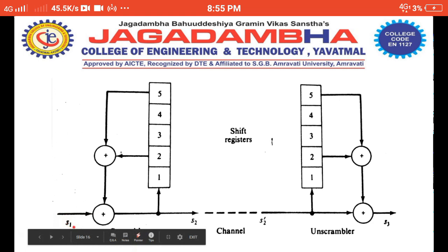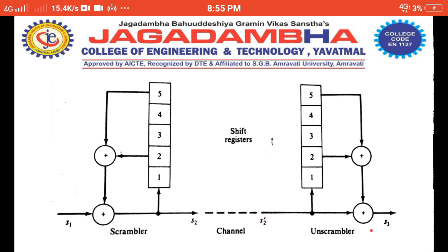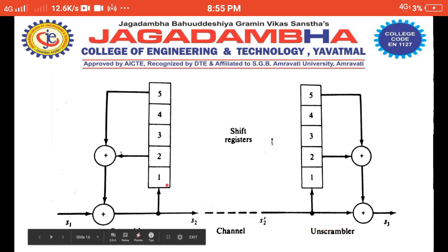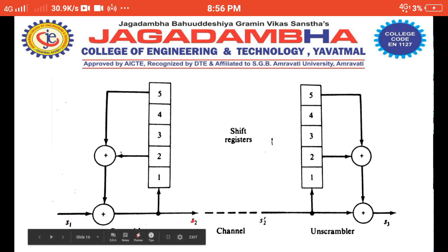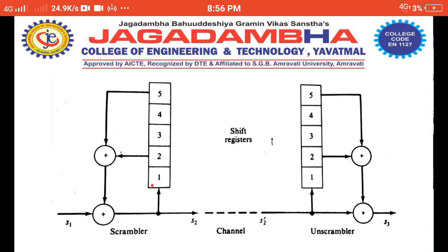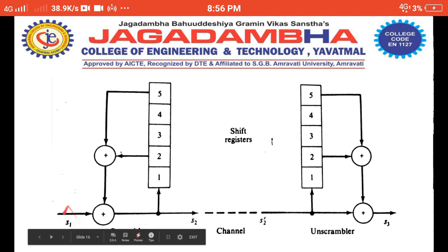In this example, S1 is the input bit sequence, S2 is the scrambled bit sequence, S2' is the received bit sequence, and S3 is the unscrambled bit sequence. In this particular example we are having a 5-bit shift register. To do scrambling, we perform modulo-2 addition of the content of shift register 2 and shift register 5, and this output is modulo-2 added with the input bit to give the scrambled bit.